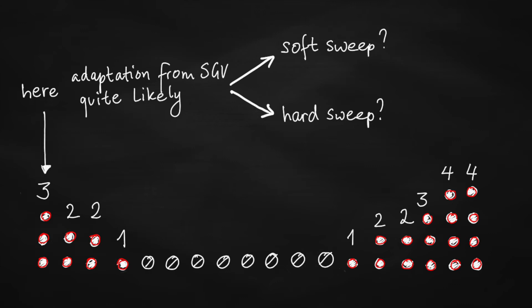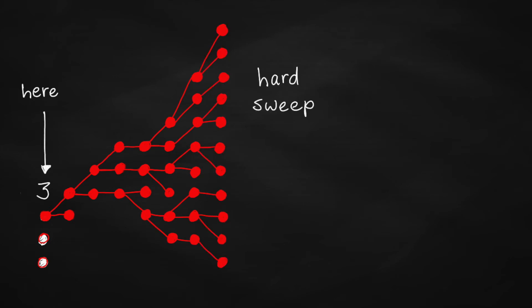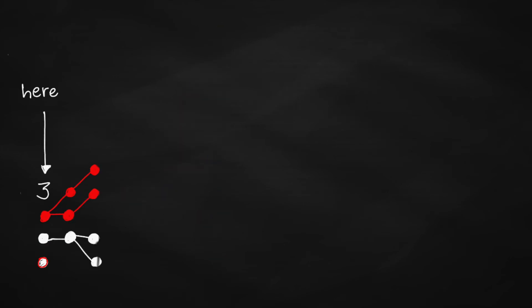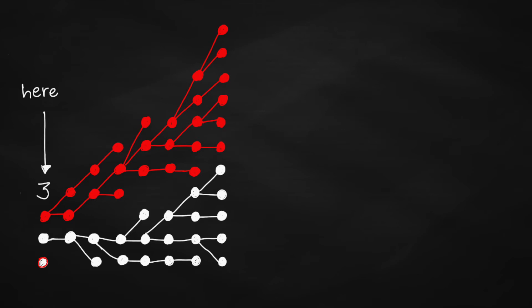If one copy of the mutant becomes established and fixes in the population, we call it a hard sweep. When multiple copies become established and fixed together, we call it a soft sweep.